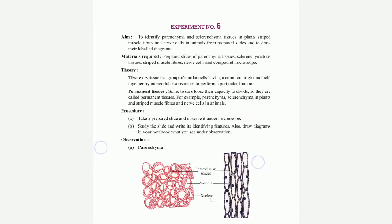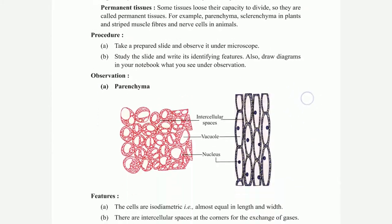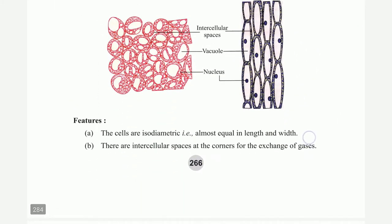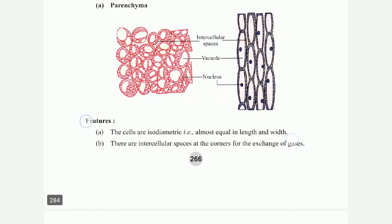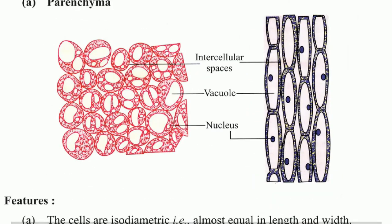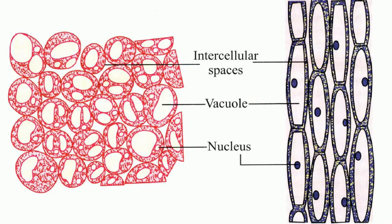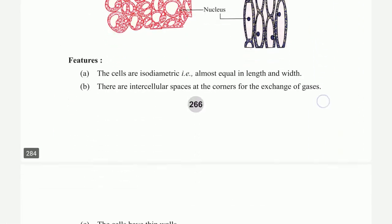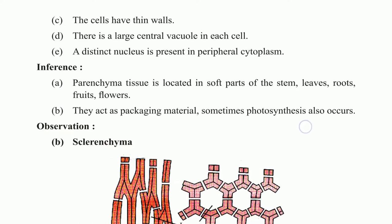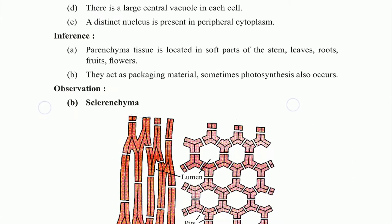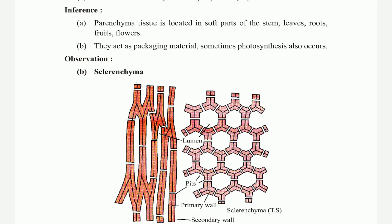Observations: the first tissue is isodiametric — almost equal in length and width. They have intercellular spaces at the corners for the exchange of gases. There is a diagram showing intercellular space. Next page shows large central vacuole in each cell, distinct nucleus in peripheral cytoplasm. Inference: sclerenchyma observations — sclerenchyma cells.